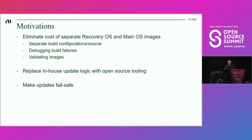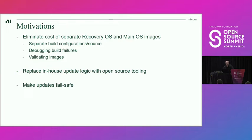So what are our motivations for doing this? Up until now we've been maintaining a separate recovery OS and main OS, and the recovery OS wasn't simple — there's actually a fair amount of logic in there. So we had two builds, two sets of configurations and source. Every time there's a build failure, there are twice as many builds to debug. We have two images to validate. We were also looking for any opportunity to reduce our own code and leverage open source work rather than maintaining our own logic for something already solved by the community. And especially, we were trying to make our updates fail-safe — our recovery OS doing those updates was a point of failure.